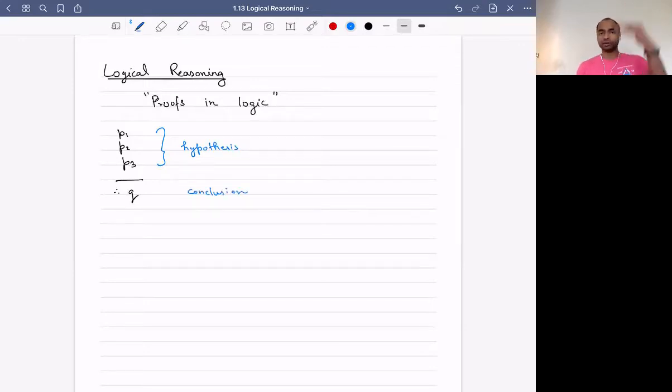And the way you read the whole thing is as follows: If P1, P2, P3 are true, then Q is true.